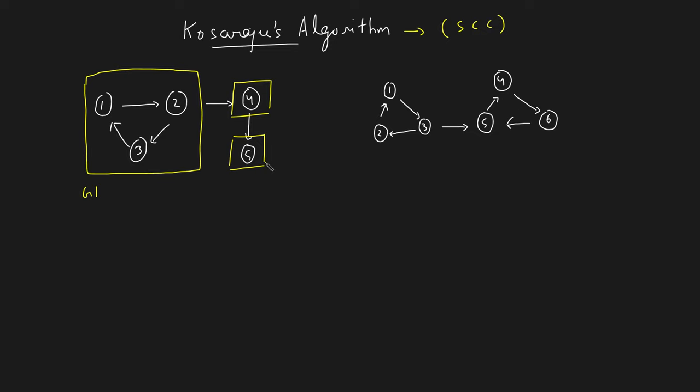The task is to print all the nodes in an SCC together — for example, printing one two three for the first SCC. The order within an SCC doesn't matter. The second SCC is four while the third is five, giving three different SCCs for this graph.